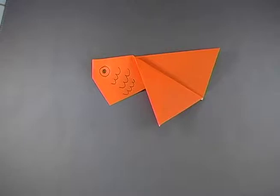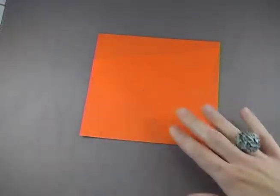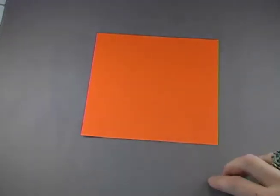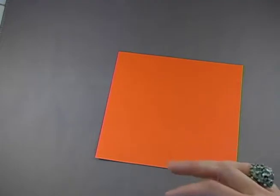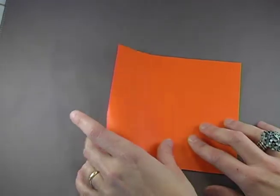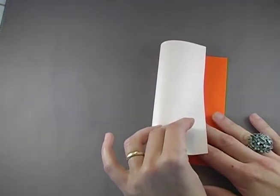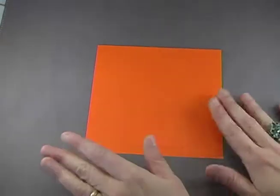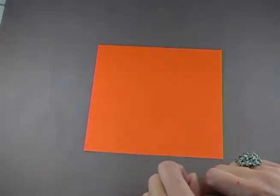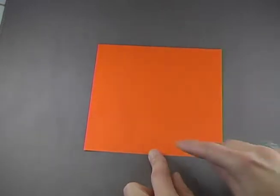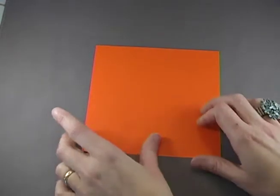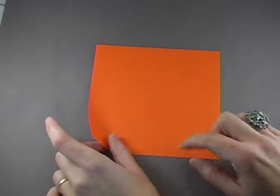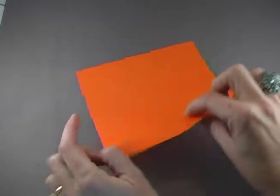So to make the goldfish origami, get a piece of origami paper. The thing about origami paper that's special is that it's colored on one side and it's white on the other side. But you can use any kind of paper. You can get scrap paper at home. As long as it's in a square shape, it'll work. So, first step, you have the color side up. And then we're going to fold it in half. This edge to this edge.